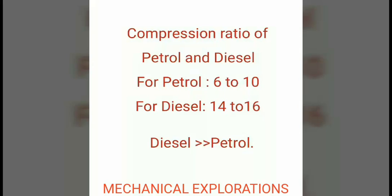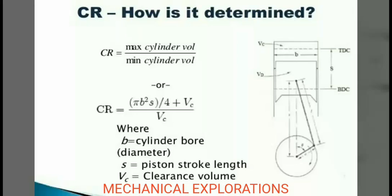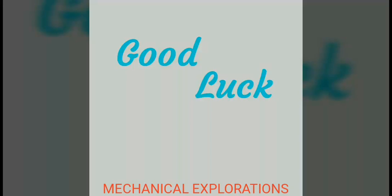You can see here there are no units because it is a ratio of the same volume. The compression ratio equals maximum cylinder volume divided by minimum cylinder volume. The minimum cylinder volume is the clearance volume, and the maximum cylinder volume is given by the bore, piston stroke, and length of the cylinder, added to the clearance volume. There is no unit due to the volume parameter.